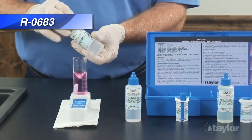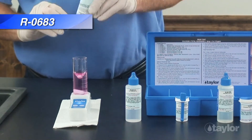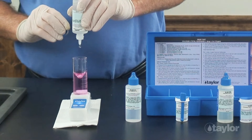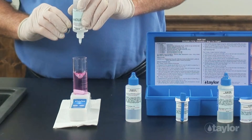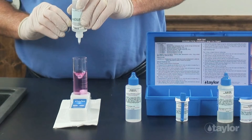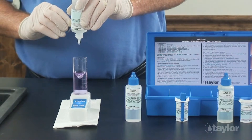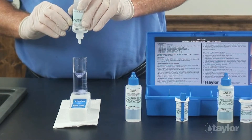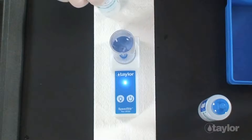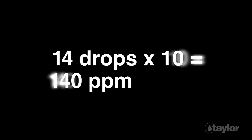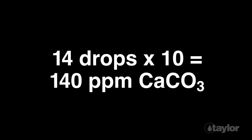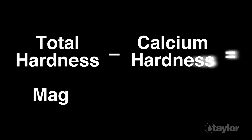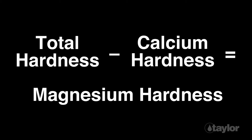Add hardness reagent drop wise, swirling and counting after each drop, until the color changes from red to blue. Multiply the number of drops of hardness reagent needed to reach the endpoint by 10 and record as parts per million total hardness as calcium carbonate. To determine the magnesium hardness in a sample, simply subtract the calcium hardness result from the total hardness result.